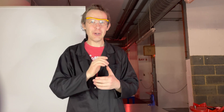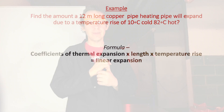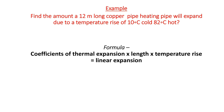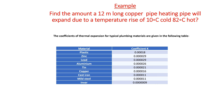We can calculate how much a pipe will expand when it is heated. Example question: find the amount a 12-meter long copper pipe used for heating will expand due to a temperature rise — 10 degrees cold and 82 degrees hot. First, we need to find the coefficient of thermal expansion for copper pipe, which is 0.000016.